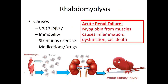Rhabdomyolysis is another common pre-hospital emergency — caused by crush injury, very strenuous exercise, or even immobility. Think about this in elderly patients who've been on the floor for days without help. Muscles break down, and one of the big components of muscle is myoglobin, a very large protein that is too big to get filtered through the smaller parts of the kidney. It clogs up the glomerulus, causing kidney injury, which leads to inflammation, dysfunction of the glomerulus, and eventually cell death.